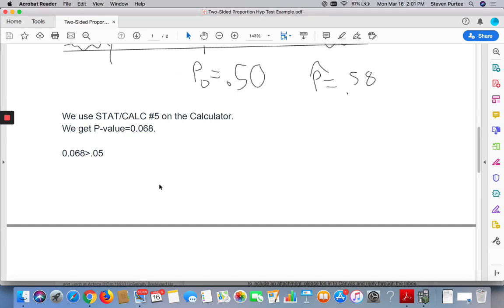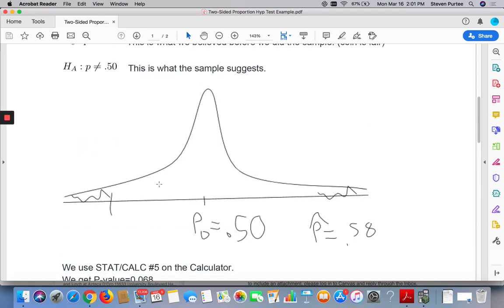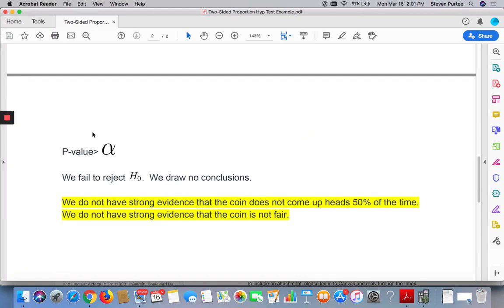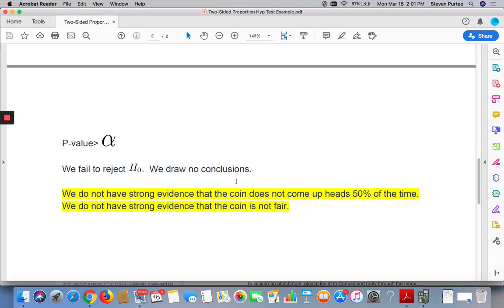And we still need to write a final sentence. Our final sentence is always going to include this statement here. We either do have strong evidence or we don't have strong evidence of the alternative. Here we do not. We do not have strong evidence that the coin is not 50% heads. So we don't have strong evidence the coin is not fair.